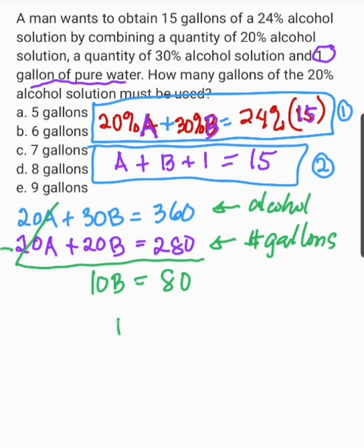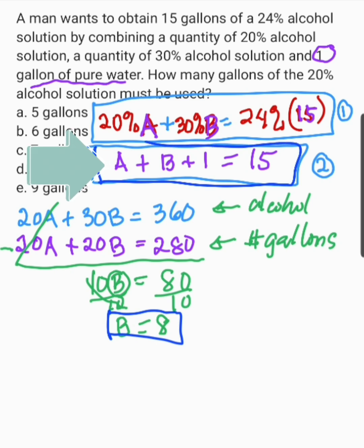Para makuha natin yung value ni B, since 10 ay pang-multiply sa B, pang-divide na siya sa 80. Nag-divide tayo ng 10 to both sides para makancel yan siya. B na lang ang natira. Now, B equals 80 divided by 10 and that is 8. So, ngayon, itong B na ito, meron tayong B. A plus B plus 1 equals 15.